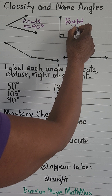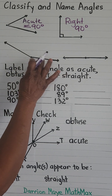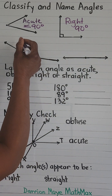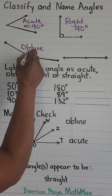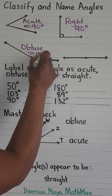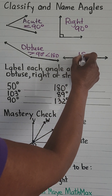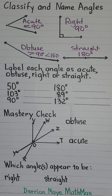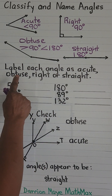A right angle is exactly 90 degrees. Next, we have an obtuse angle, which is more than 90 but less than 180 degrees. And then we have a straight angle, which is exactly 180 degrees. Now let us label these angles according to their names: acute, obtuse, right, or straight.